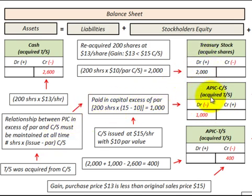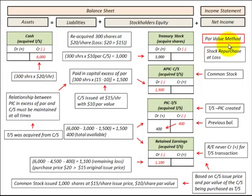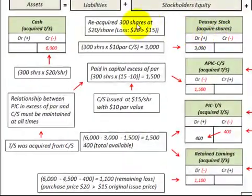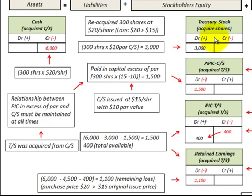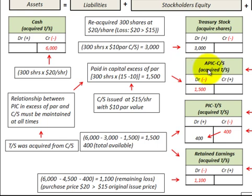Here we're going to use the par value method for a stock repurchase at a loss. This loss is determined by the fact that the price we're paying to buy back this stock is greater than the issue price of the common stock. Looking at our Treasury stock account, we take the number of shares we're buying back times the par value of the common stock to increase Treasury stock. Then on our cash account, we reduce it by the number of shares times the actual price paid per share. We then go to additional paid-in capital for common stock to maintain the relationship, taking the number of shares times the difference between the issue price minus the par value.